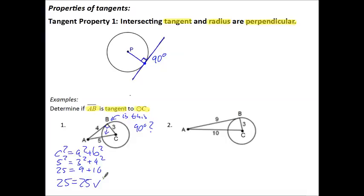Check. So we can say, yes, AB is a tangent segment because AB is perpendicular to BC.